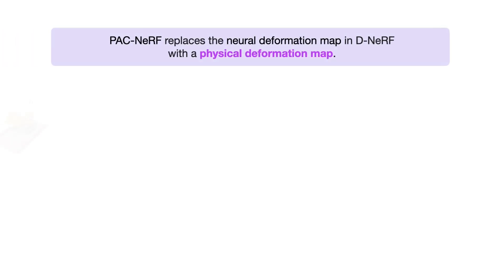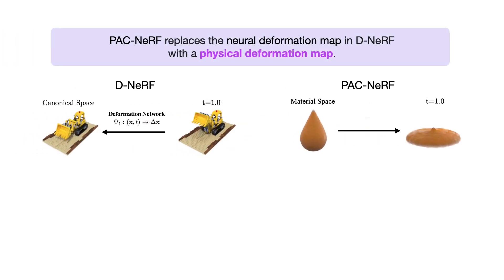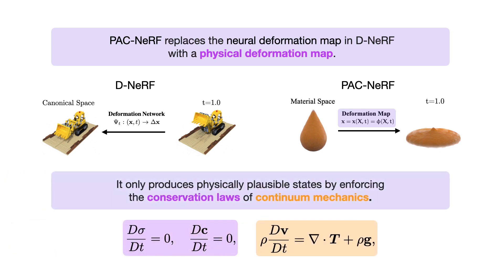PAC-NERV replaces the neural deformation map in D-NERV with a physical deformation map. It only produces physically plausible states by enforcing the conservation laws of continuum mechanics.